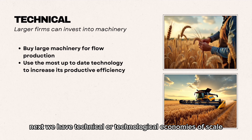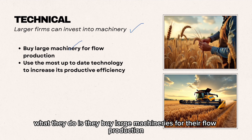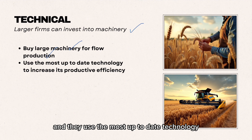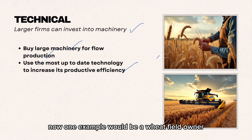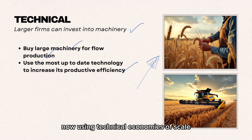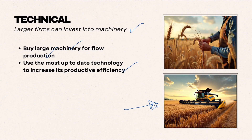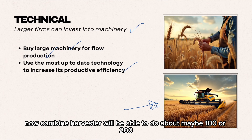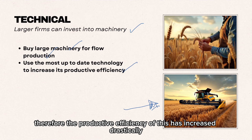Technical or technological economies of scale is when larger firms can invest in machinery — buying large machinery for their flow production and using the most up-to-date technology to increase productive efficiency. For example, a wheat field owner used to pick wheat by hand, but using technical economies of scale they can buy a combine harvester, which can do the work of around 100 to 200 people. Therefore, productive efficiency has increased drastically.